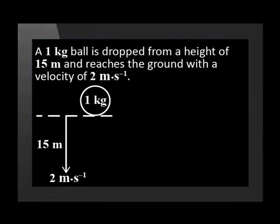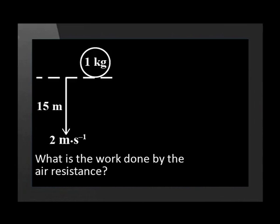Let us look at the following situation: a one-kilogram ball is dropped from a height of 15 meters and reaches the ground with a velocity of 2 meters per second. What is the work done by the air resistance? Remember that air resistance is a non-conservative force and it does negative work.